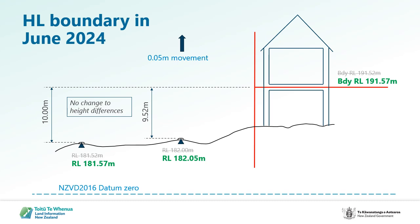The RL on Mount Albert has changed by 0.05 metres. To check it wasn't just disturbance of that mark, I've checked values on other nearby marks, and their published values also increased by approximately 0.05 metres at the same time. So keeping in mind that if the marks have risen, then the building probably has too. To reinstate the boundary, I therefore need to hold the relative heights between the monuments and the height limited boundary. This has the effect of adjusting the RL of the height limited boundary from 191.52 to 191.57, which makes sense as it reflects the fact that the building, the land, and the marks have all moved up 0.05 relative to the NZVD 2016 datum. If possible, I might also try to measure a floor level just to make sure.